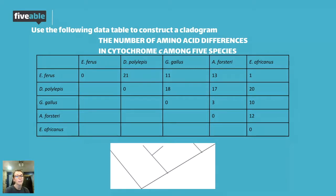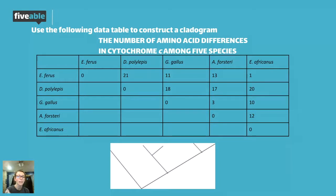On the flip side, E. africanus and E. ferris — in the upper right corner — only have one amino acid difference. They're incredibly similar species that probably had a most recent common ancestor. This also makes sense because they both share the same genus name 'E.' — same genus, different species names. So right off the bat, E. africanus and E. ferris need to be really close together on the phylogenetic tree, while D. polylepis and E. ferris need to be really far apart.